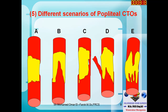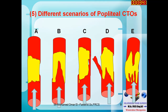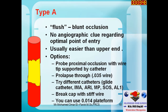In my experience with popliteal axis going to SFA occlusion from below, you will encounter one of five scenarios: Type A — blunt occlusion; Type B — an occlusion with a crack in the middle guiding intra-luminal passage; Type C — occlusion with a small tunnel near the wall lumen; Type D — occlusion with a side branch; and Type E — complicated multiple tracks with difficult anatomy, the most difficult type.